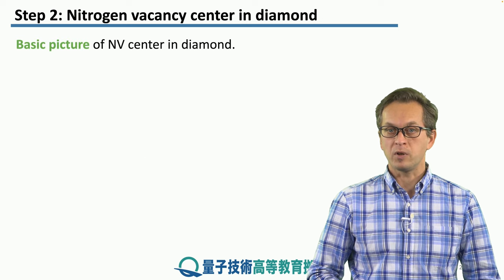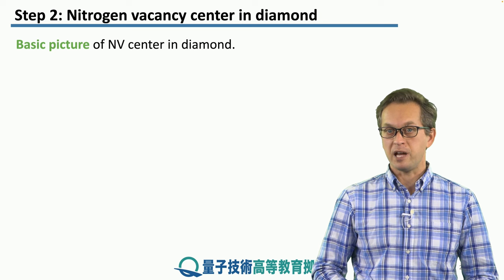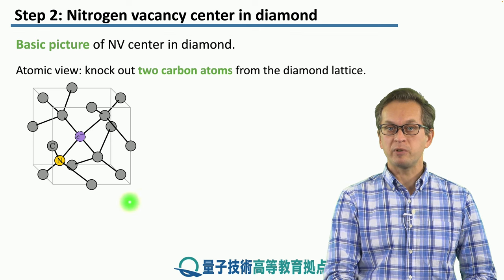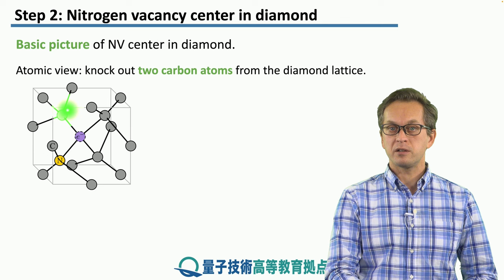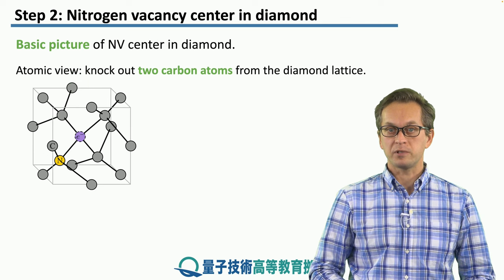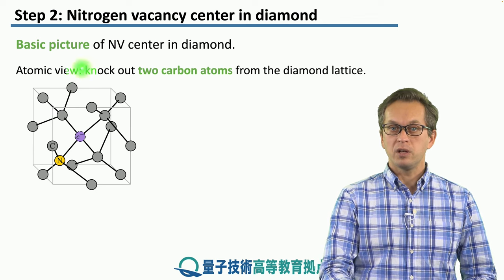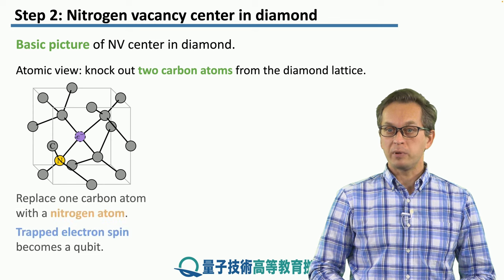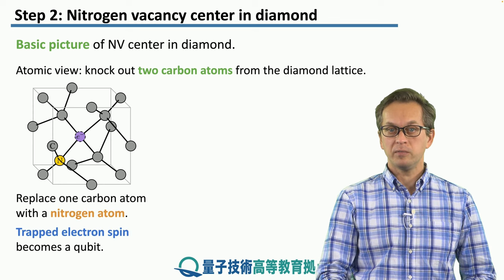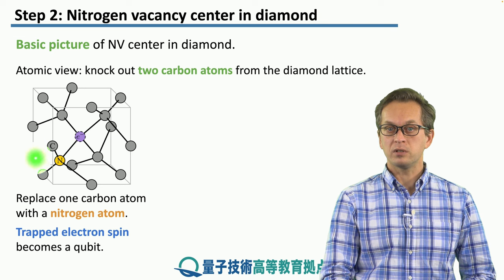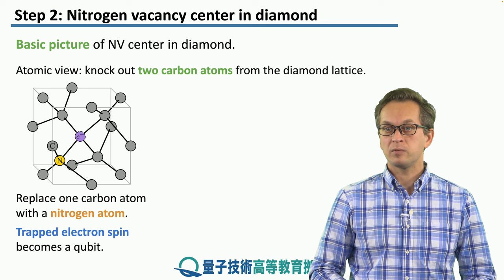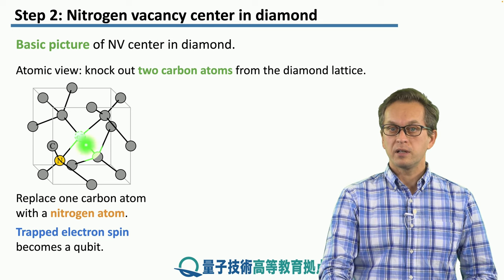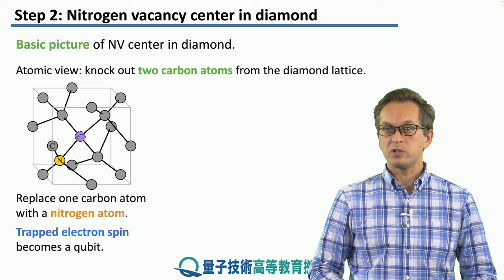One such example of a quantum memory is the nitrogen vacancy center in diamond. Here on the left side we've got the carbon lattice of a diamond — these gray circles represent carbon atoms. What we have to do is knock out two carbon atoms from the lattice. We replace one of the knocked-out carbons with a nitrogen atom, represented by this yellow circle. And that's how we get the nitrogen vacancy center. The vacancy can trap a single electron spin, which then acts as our qubit.